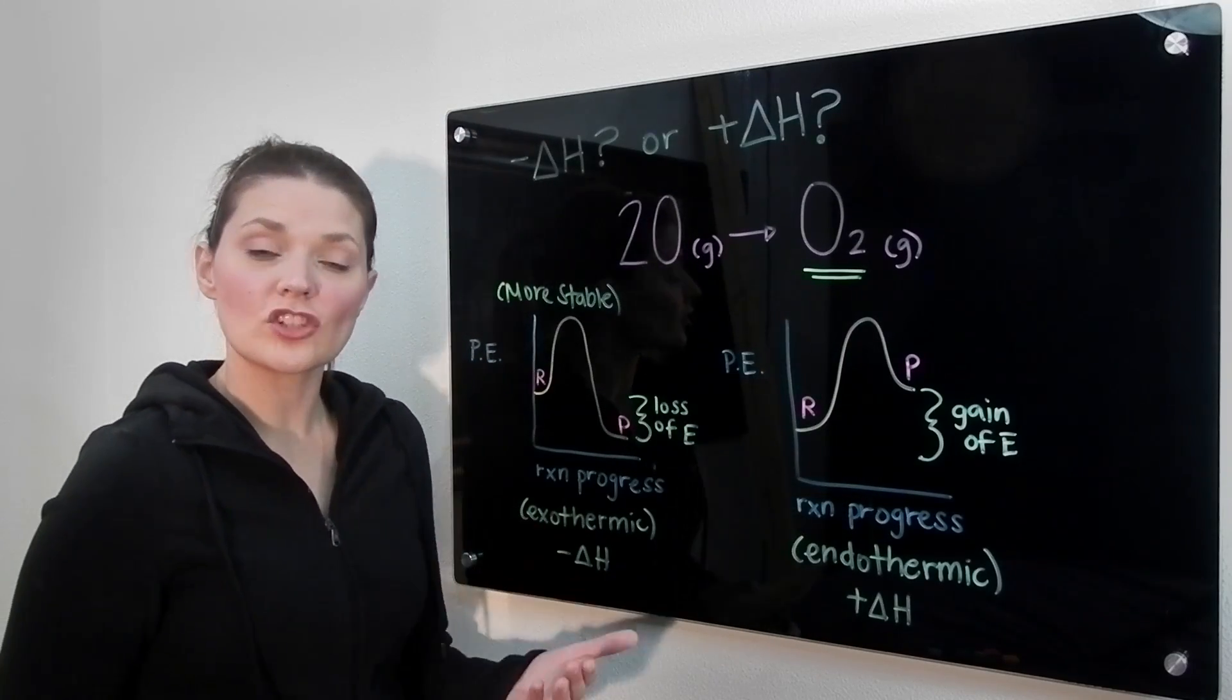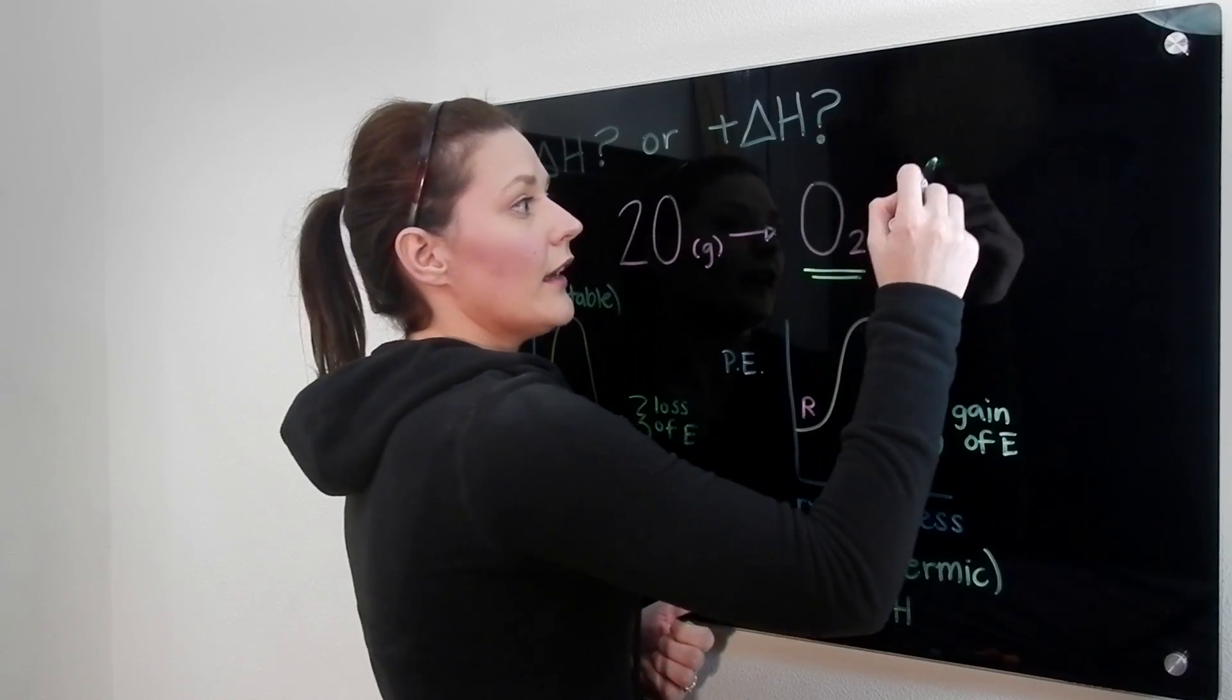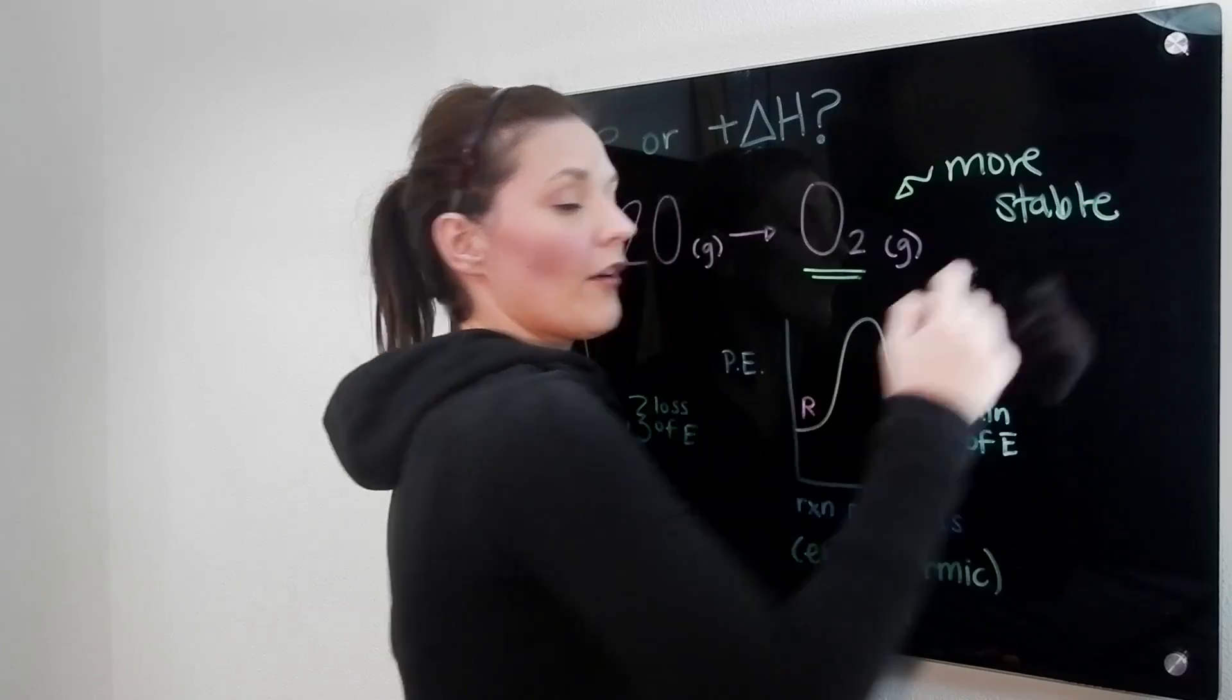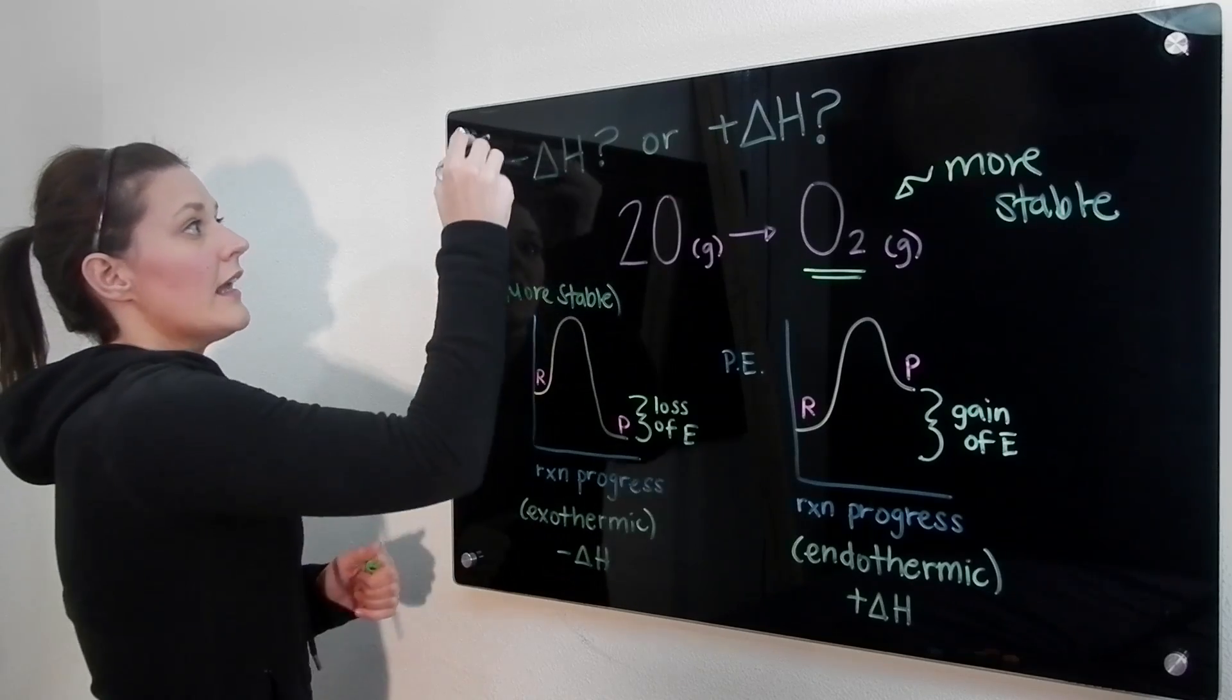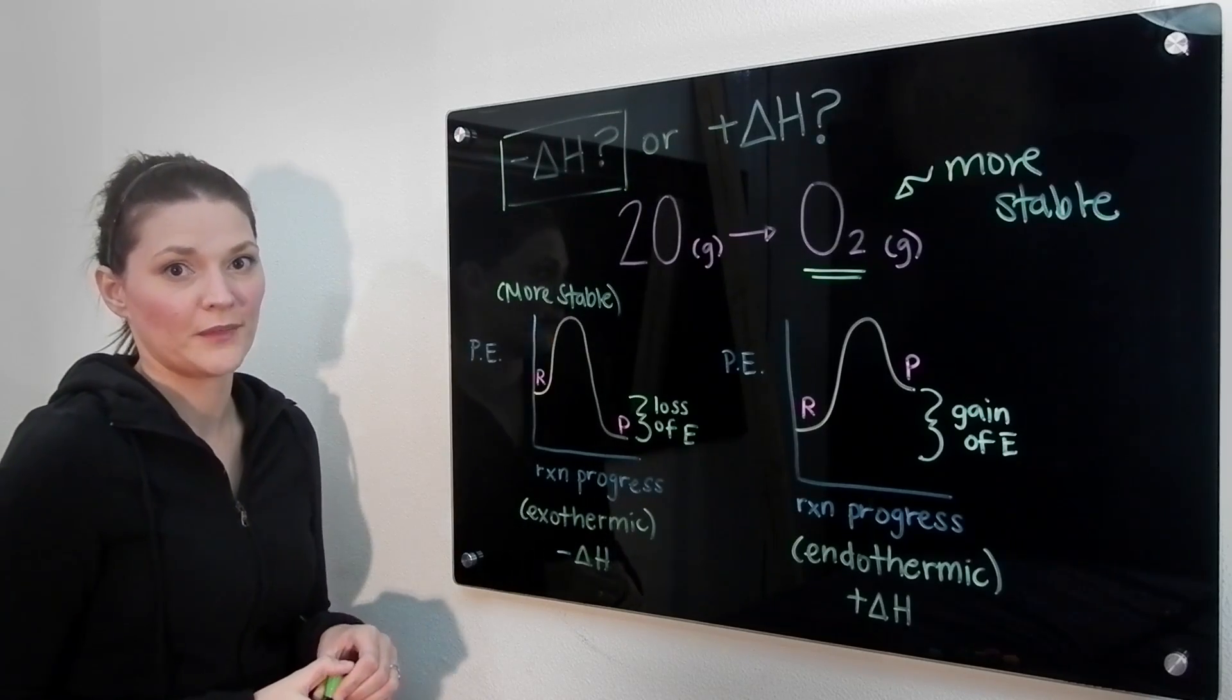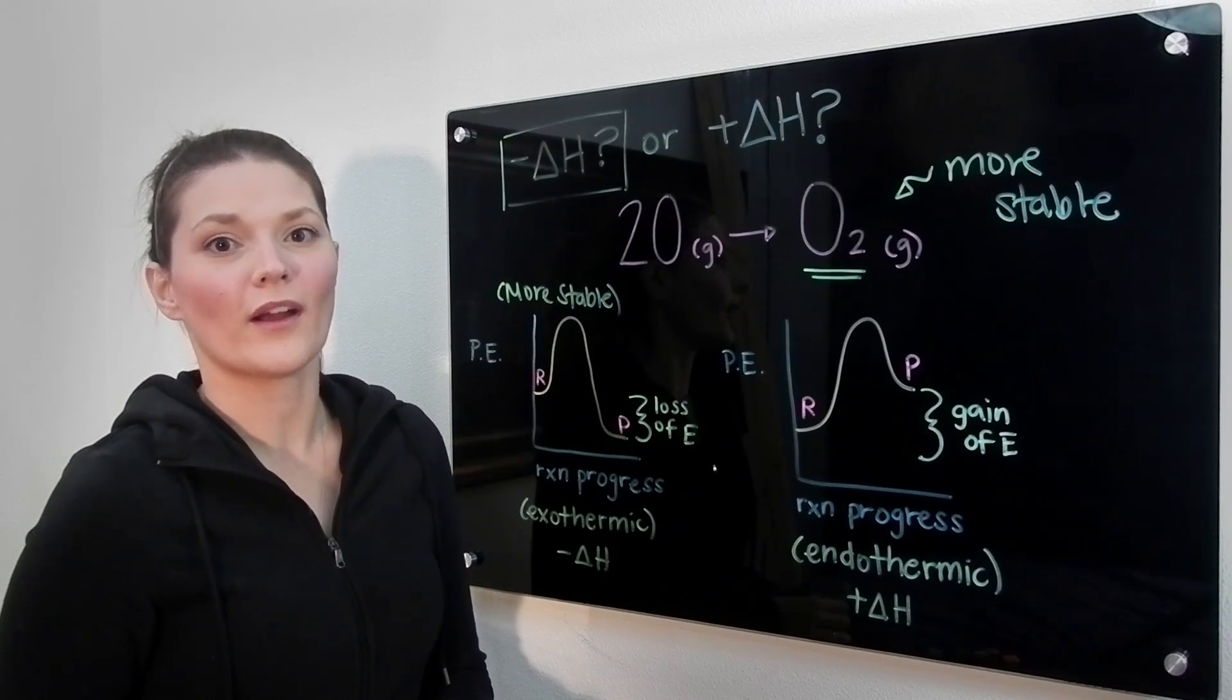So if oxygen preferentially is in the diatomic state, that means that this here is the more stable species that we have. So because we're going from less stable to more stable, we're talking about the exothermic case. And exothermic is represented by a negative enthalpy value. And that is how you would figure out if a reaction is exothermic or endothermic.